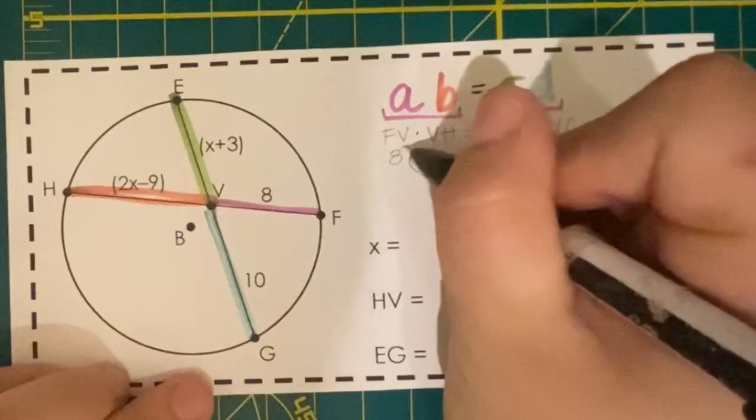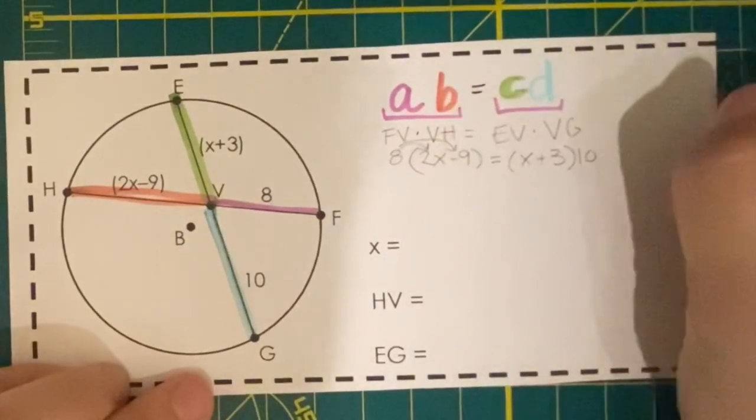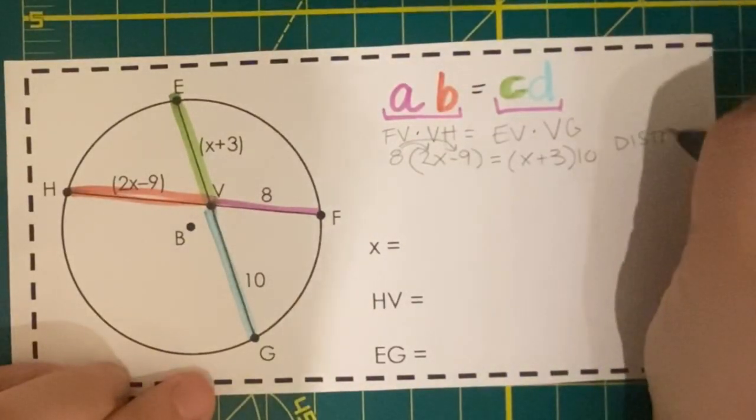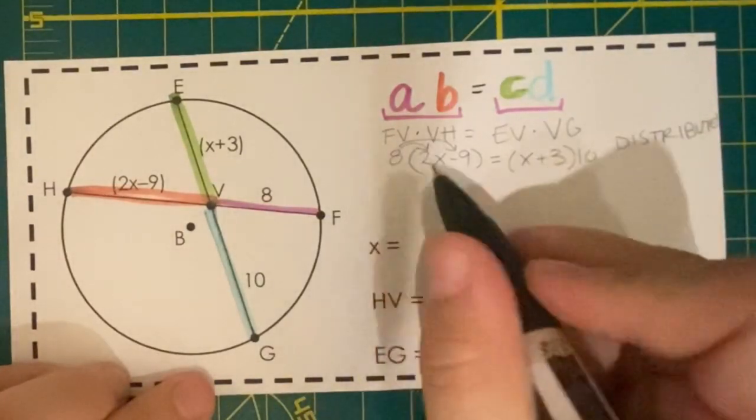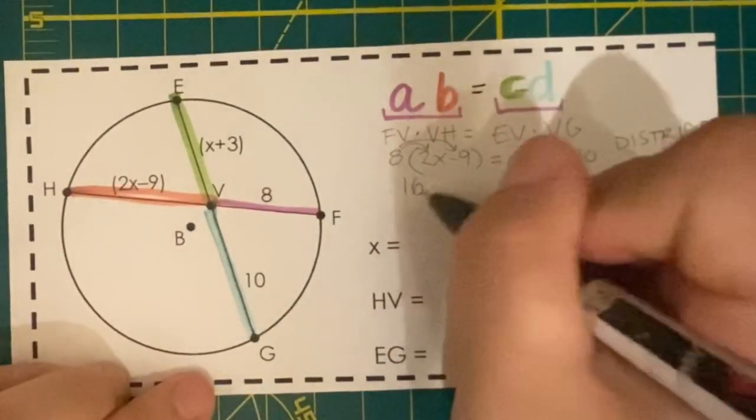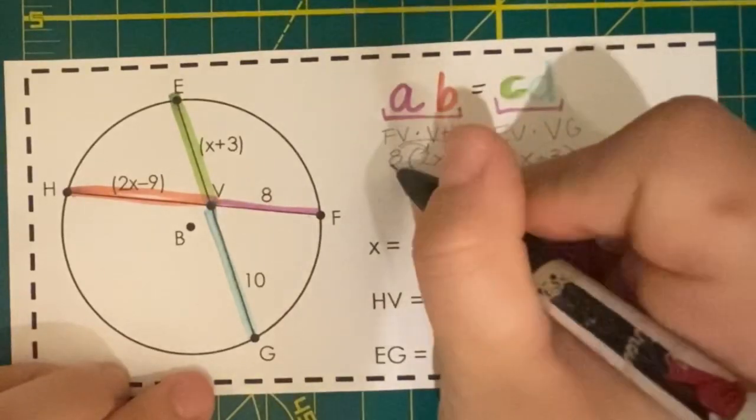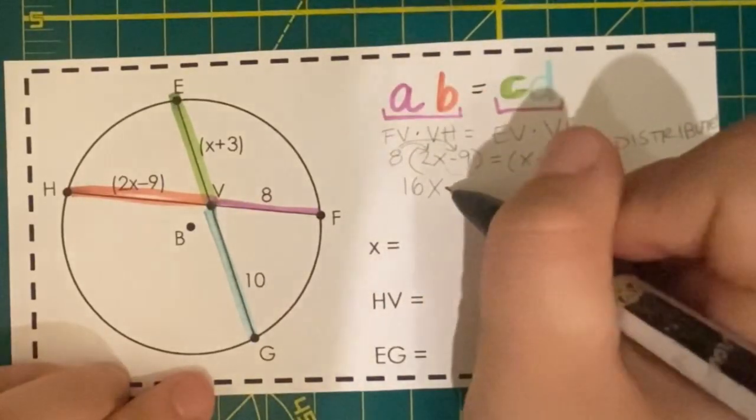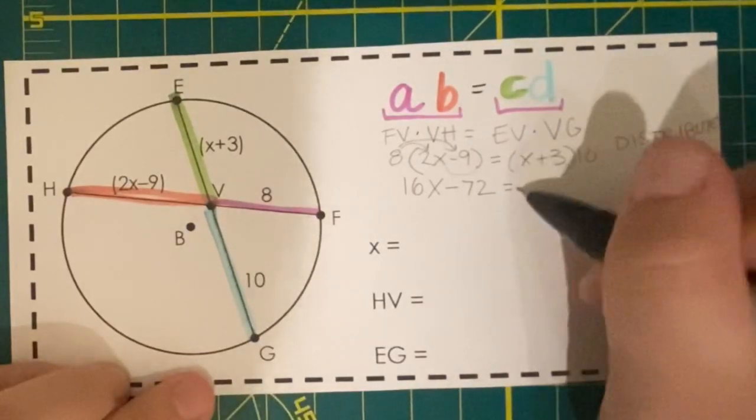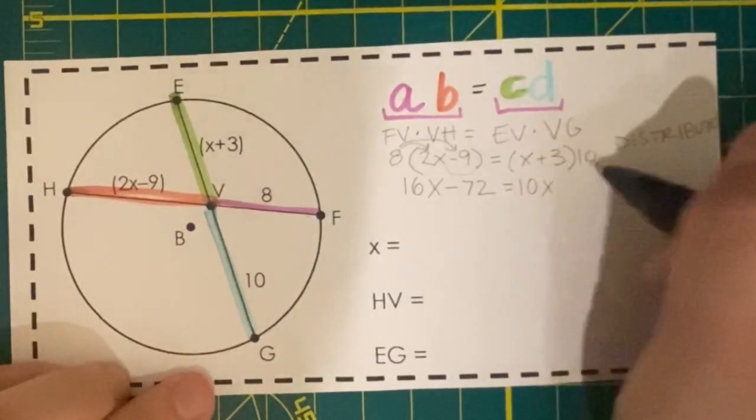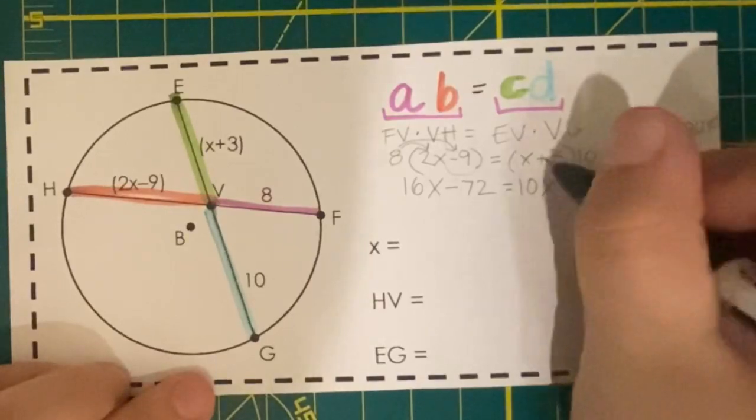Now we're going to need to distribute. So 8 times 2x is 16x, 8 times negative 9 is negative 72. x times 10 is 10x, 3 times 10 is 30. This time they're both positive.